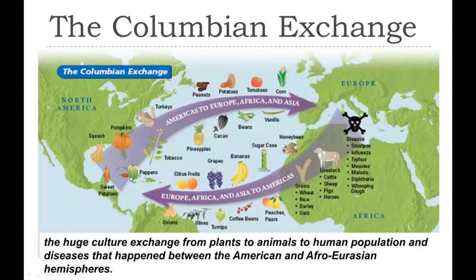Sweet potatoes, turkeys — those types of things went back to Europe. Here's what Europe brought to the Americas: lots of animals — horses, pigs, sheep, and cattle — lots of grains, some fruits, coffee beans from Arabica that they had gotten via the Silk Road, olives and onions. They introduced those to the Americas. Honeybees were not originally here; sugarcane, bananas, and grapes were also new to the area.